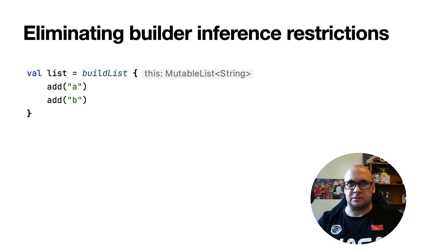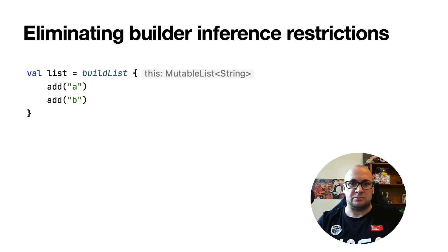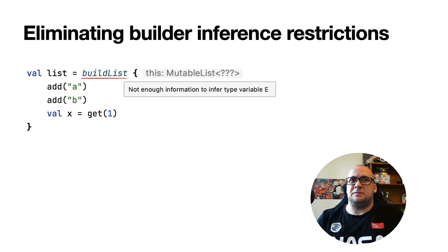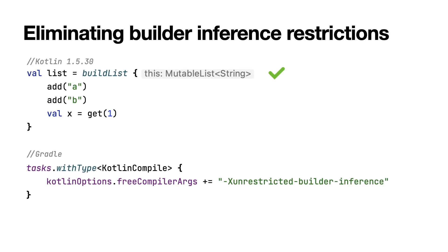Next on the list is builder inference — a special kind of type inference which allows inferring type arguments of a call based on type information from other calls inside its lambda argument. This is useful when calling generic builder functions like buildList or sequence. However, inside such lambda arguments there is currently a limitation: you can only specify the type information that builder inference tries to infer, but you cannot get it. For example, you cannot call the get function inside the lambda argument of a buildList function without explicitly specifying the type arguments. Now we remove these limitations with the unrestricted-builder-inference compiler option. It is possible to skip specifying the type parameter and the compiler infers the type information for us. In our example, it is now possible to call the get function inside the parameter block for the buildList function.